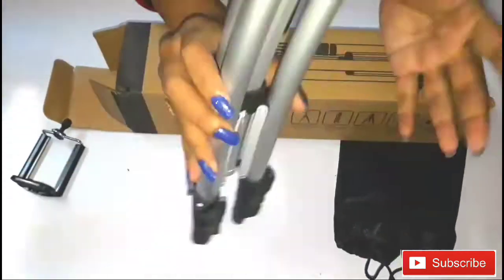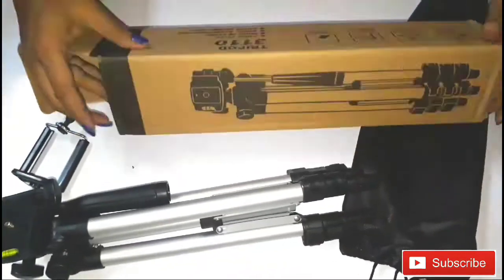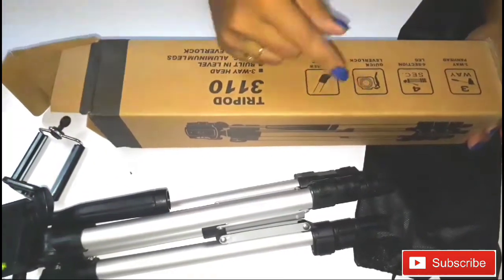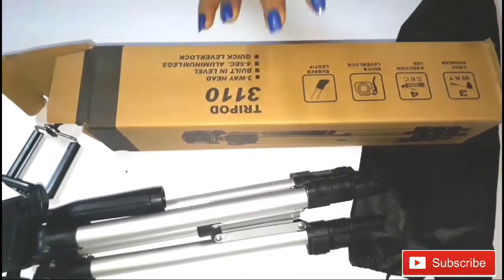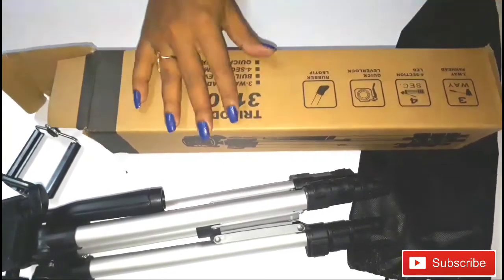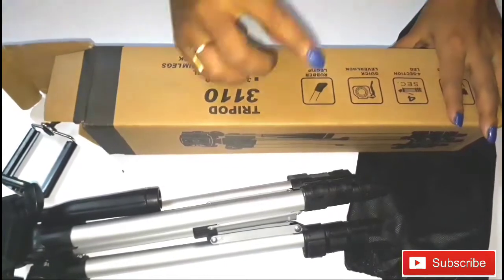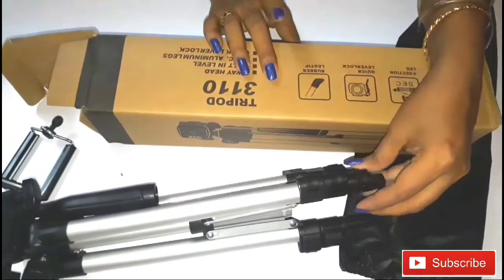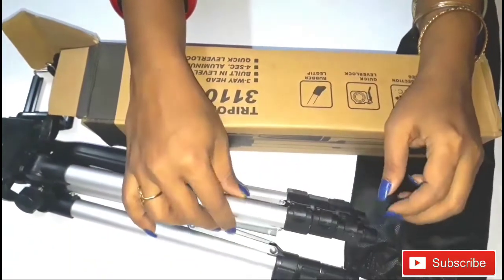This is our small tripod. This is a 3-way pan head. This is 4-section legs. This is a quick level lock. This is a rubber tip. It is easy to keep.